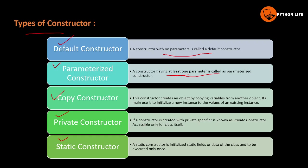The private constructor: if a constructor is created with a private access specifier, it is known as a private constructor. It is accessible only for the class itself. In inheritance and other classes, it will be restricted.